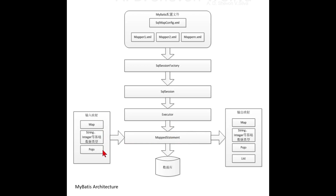The input parameters — including String, Integer, and other basic types as well as POJO — are connected to the MappedStatement. The MappedStatement is connected to the output results, which include Map, String, Integer, POJO, and List. Finally, the MappedStatement is connected to the database.